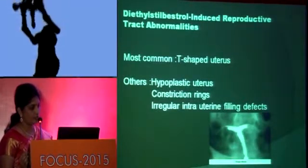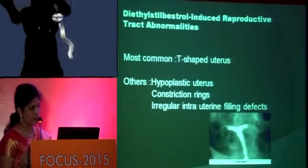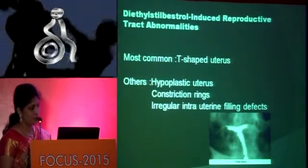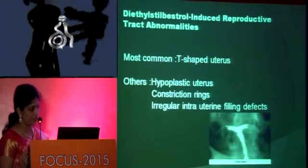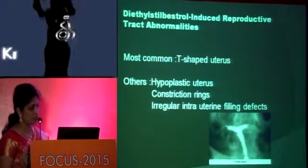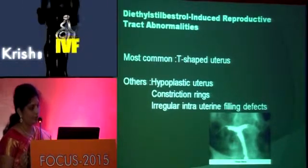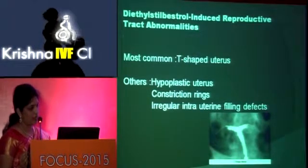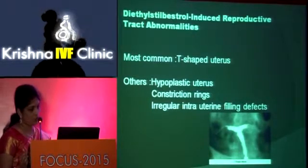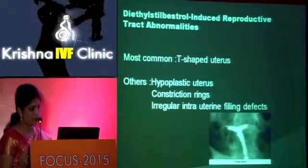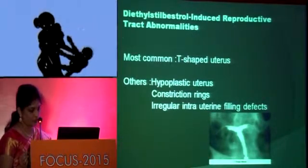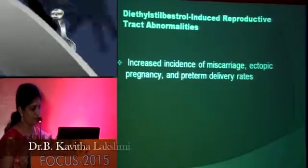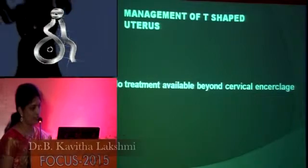Diethylstilbestrol (DES) is a synthetic non-steroidal oestrogen used from the 1940s to 1971 in America, UK, Europe, and France in pregnant women to decrease the miscarriage rate. It was banned in 1971 due to its association with vaginal clear-cell adenocarcinoma. 70% of exposed women are associated with reproductive tract anomalies. The most common is the T-shaped uterus; others include hypoplastic uterus, constriction rings, and irregular intrauterine filling defects. There is increased incidence of miscarriage, ectopic pregnancy, and preterm delivery, and no treatment is available beyond cervical cerclage.